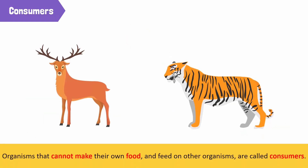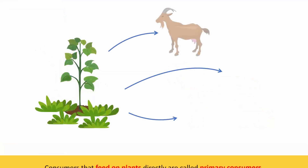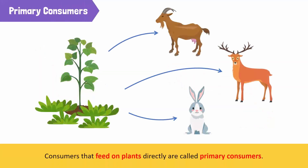Organisms that cannot make their own food and feed on other organisms are called consumers. There are different levels of consumers. Consumers that feed on plants directly are called primary consumers. Goats, deer, rabbits, and grasshoppers are all examples of primary consumers.